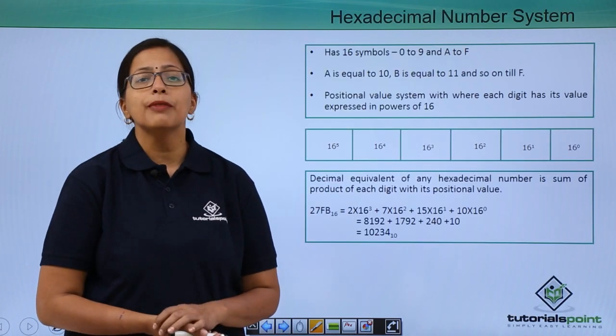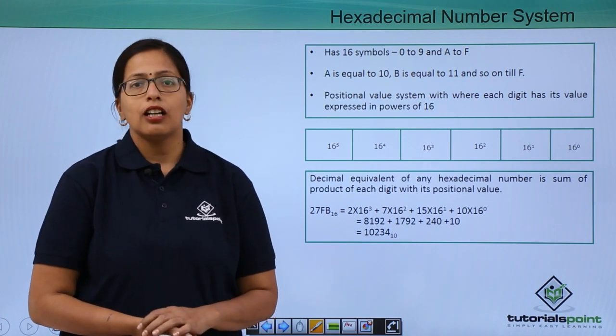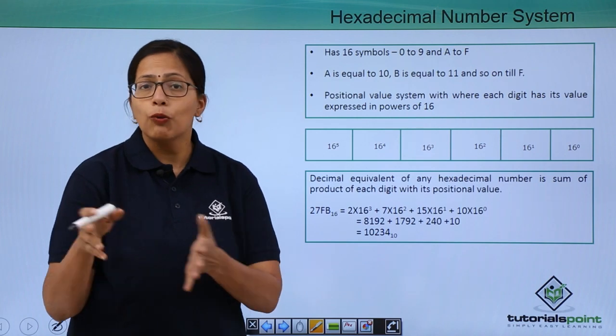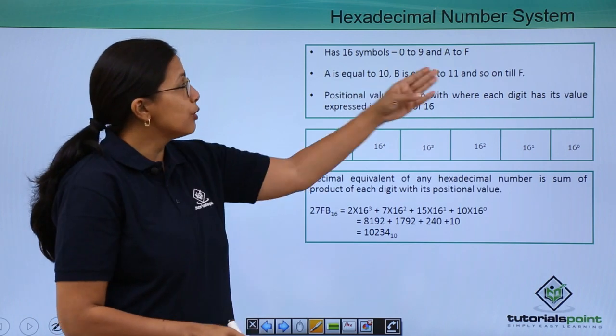Hexadecimal number system has got 16 digits: 0 to 9, but then that makes only 10 digits. What about the 11th? A to F.